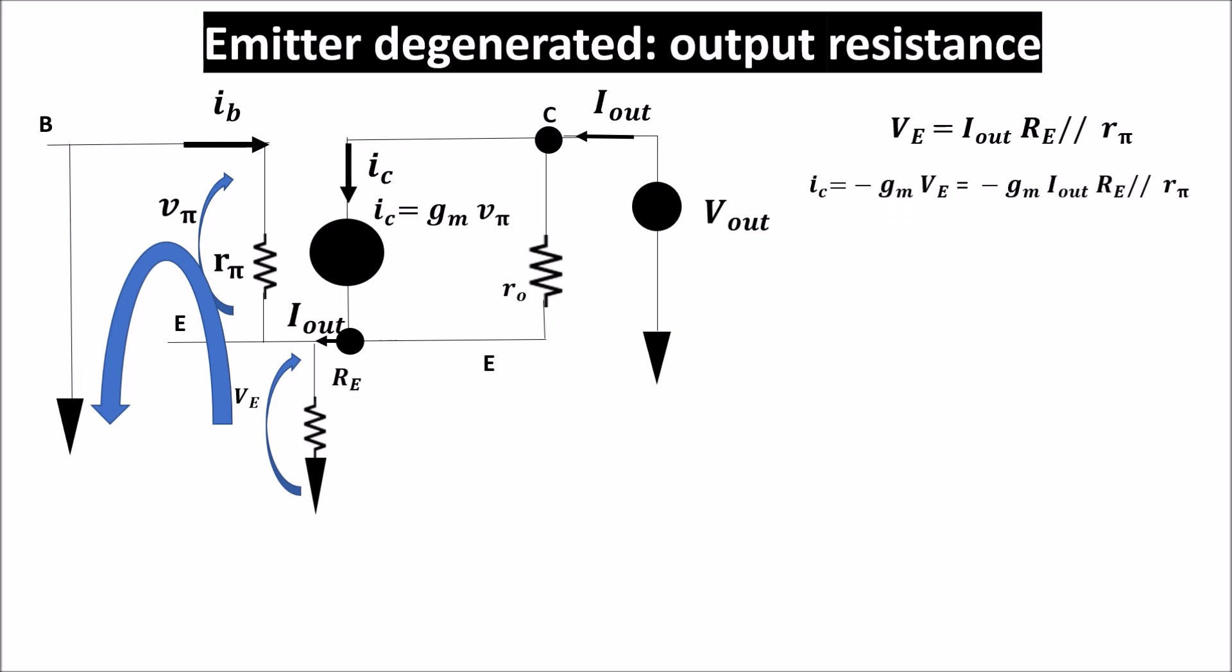Now we can write the Kirchhoff voltage law on the output circuit, so V_out is equal to V_E plus the voltage drop on little r_o. Expliciting I_C and V_E we get this equation, and grouping in this way we can see that the output resistance is more than that of the basic configuration, which is simply little r_o.